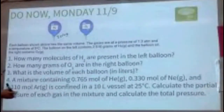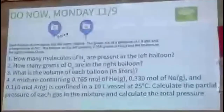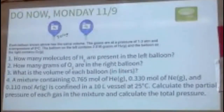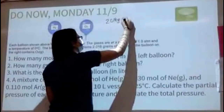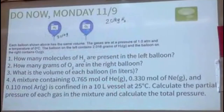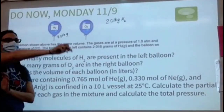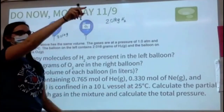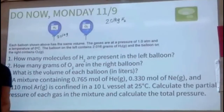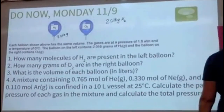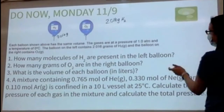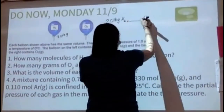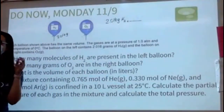This wants us to go from grams of hydrogen to molecules of hydrogen — a stoichiometry problem going from grams to molecules of the same substance. Before we can use Avogadro's number, which is on your equation sheet, you need to get to moles first. Moles is always what we have to go to in between.